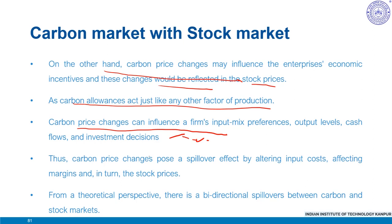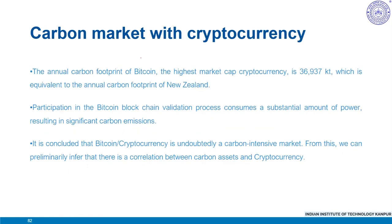Thus, carbon price changes pose a spillover effect by altering input costs and affecting margins and internal stock prices. From a theoretical perspective, it appears to be a bidirectional spillover between carbon and stock markets. In terms of connectedness with cryptocurrency markets, the annual carbon footprint of Bitcoin, the highest market cap cryptocurrency, is around 36,937 kt.